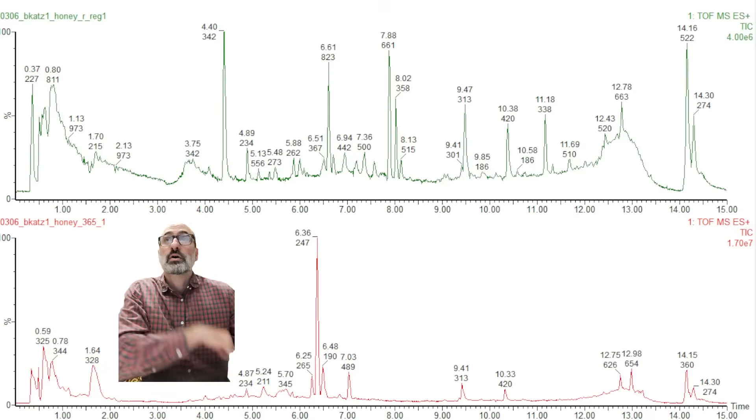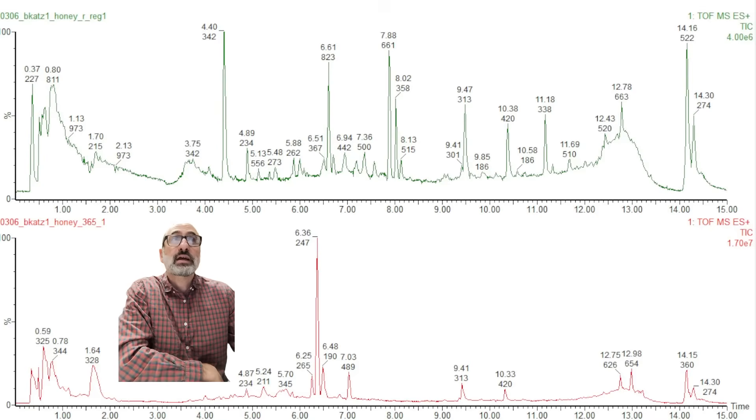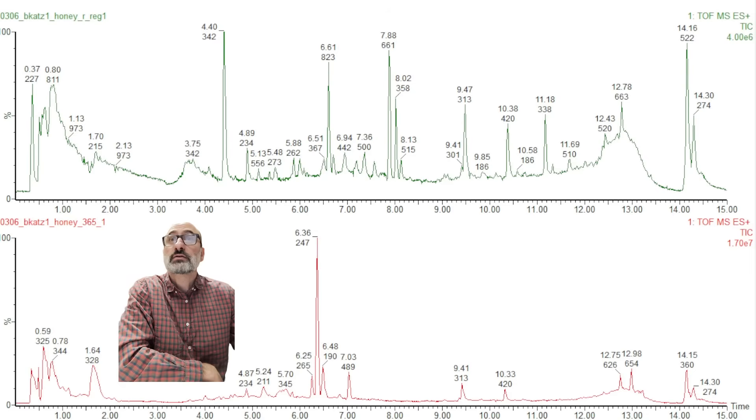All right. Here it is. Zivo Q-TOF data, positive mode, run out on the phenyl hexyl column, which is really good for sugars and phenolics and things like that. But on the bottom, you can see we have the 365 honey, not a ton of peaks, just this 247 peak that we see in a lot of honey.